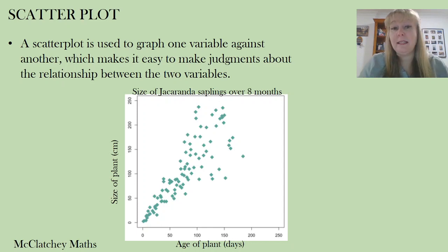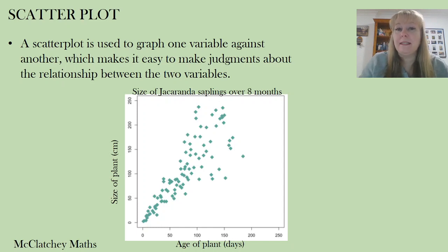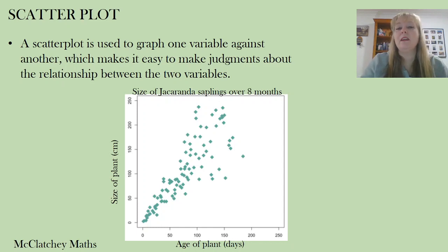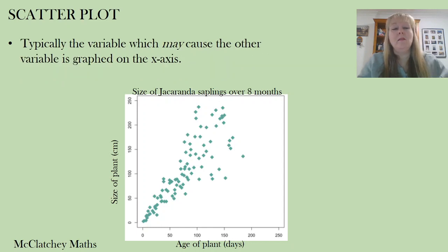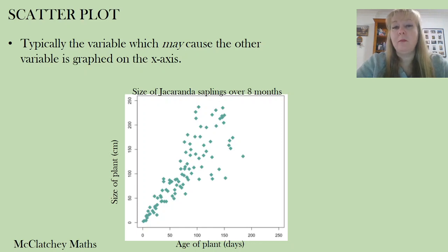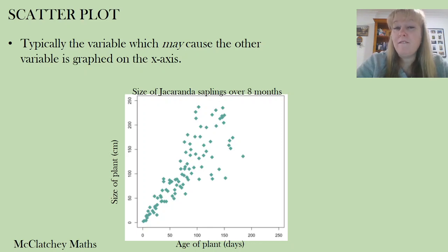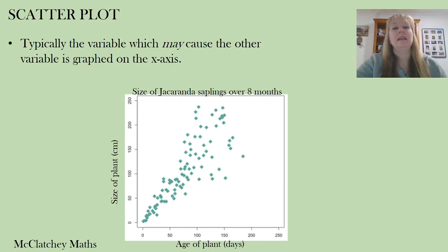In this scatter plot we can see that the more time that goes by, the bigger the plants are growing, which is what you'd expect from jacaranda saplings over an eight-month period. Typically, one variable may cause the other, and that one is graphed on the x-axis. Sometimes one variable might be the cause of the other, and you can work out which from the specific context.